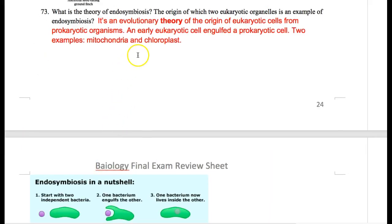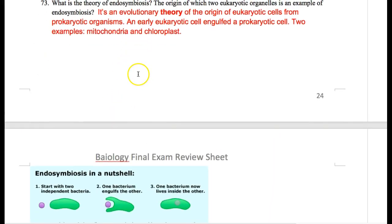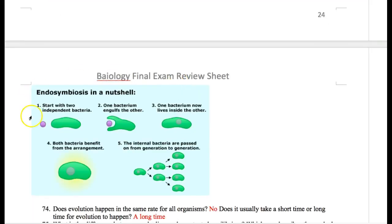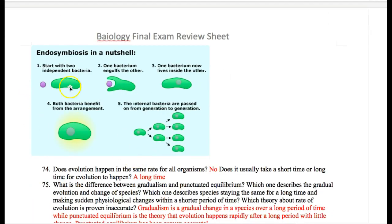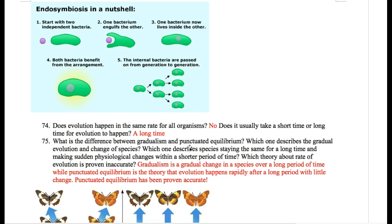Theory of endosymbiosis — examples are mitochondria and chloroplasts. We had a prokaryote and a eukaryote. The eukaryote kind of 'ate' the prokaryote; eventually the prokaryote became part of the eukaryotic cell as an organelle and stayed there forever.